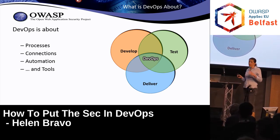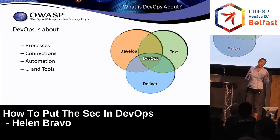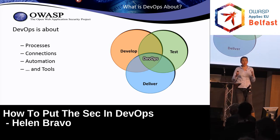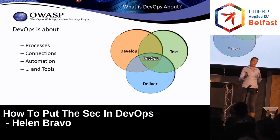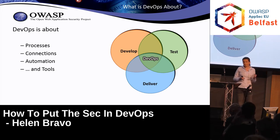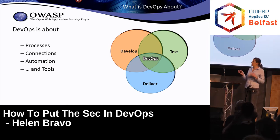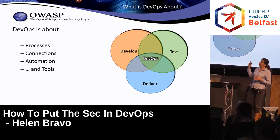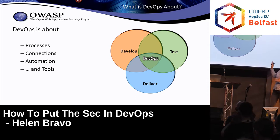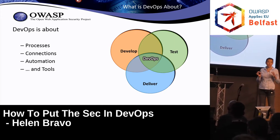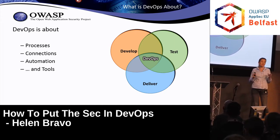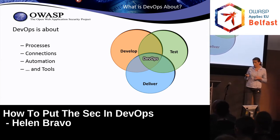I wanted to map in my presentation what DevOps processes and building blocks are, and how security checks might fit into each and every one of them. Speaking as a general approach, DevOps is about processes, connections between development, tests and delivery processes, and automation — the automation of those processes is probably the key.